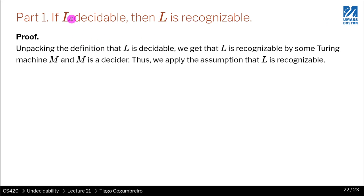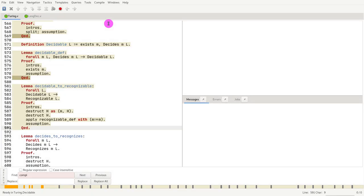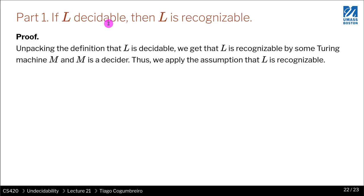This first part — if L is decidable then L is recognizable — is true. Really, if you think about it, all languages that are decidable have to be recognizable according to their definition. So you simply need to massage the assumption until you get there.